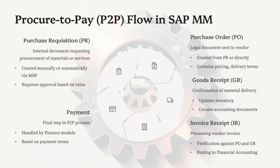Section 3: The Procure-to-Pay (P2P) Process. Let's walk through the procure-to-pay process from start to finish. Step 1: a department identifies a need and creates a PR (transaction ME51N). Step 2: the PR is approved and converted into a PO (ME21N). Step 3: the vendor delivers goods and the warehouse records the GR (MIGO). Step 4: accounts receive an invoice and MM performs a three-way match (MIRO). Step 5: payment is released via the FI module (F110). This process ensures control, transparency, and integration between procurement, inventory, and finance. P2P is at the heart of MM — whether you're buying pens or jet engines, this flow remains the same.